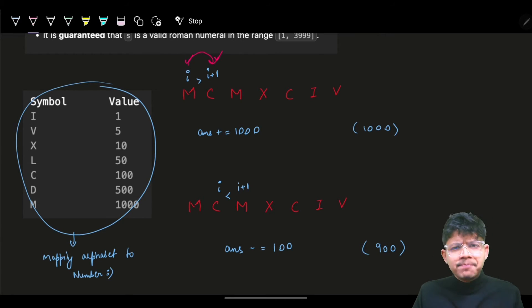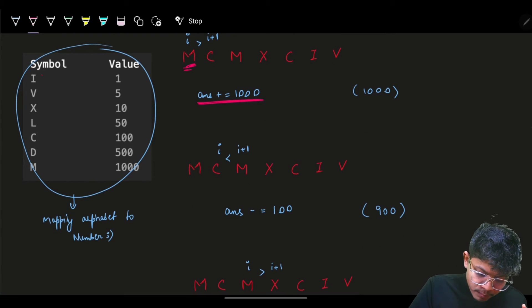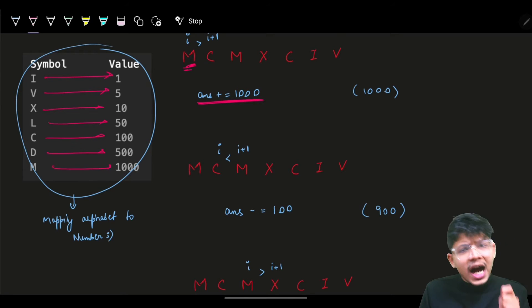When I say add M, you will have a mapping from these alphabets to these numbers. You'll have an unordered map where you can hard code these six or seven variables.